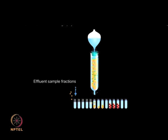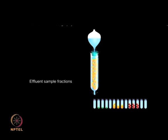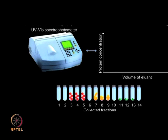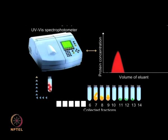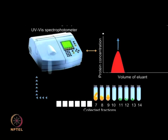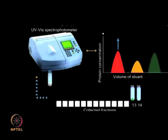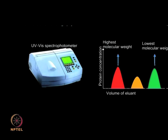Fractions of appropriate size are collected and analyzed for protein content using a UV-visible spectrophotometer at 280 nanometers. Once all absorbance values are recorded, a graph of elution volume versus protein concentration can be plotted. The highest molecular weight proteins appear first and the lowest molecular weight towards the end.